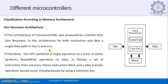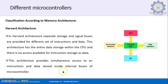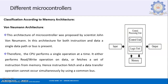Harvard architecture is faster compared to Von Neumann. The advantage of Von Neumann is that it uses a single data path, so the area required to build it is smaller. Von Neumann is smaller in size, whereas Harvard is larger because it has separate buses for instructions and data. Depending on your application — if you need speed, choose Harvard; if size matters more, choose Von Neumann.